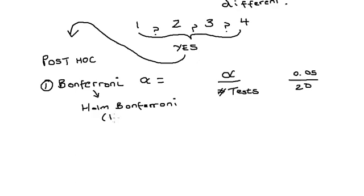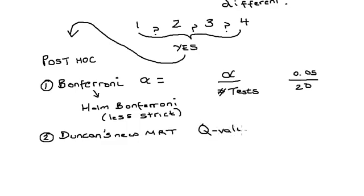There is a less strict version called the Holm sequential Bonferroni post hoc test. Duncan's multiple range test will identify pairs of means that are different. It uses something called a Q value, and many different post hoc tests are quite similar except they use different values.